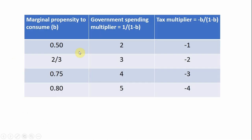In this table, I'm taking various values for the marginal propensity to consume from 0.5 to 0.8 and plugging them into our government spending multiplier and tax multiplier. Plugging 0.5 into the government spending multiplier, we get 2 — so every dollar of government spending increases income by $2. With an MPC of 0.5, every dollar change in lump sum taxes will change income by $1.